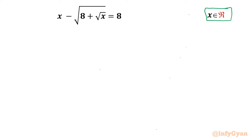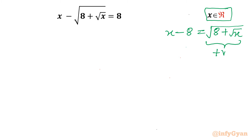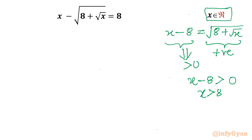Let's get started by writing the domain of the equation. I will write our equation as x minus 8 equal to square root of 8 plus square root x. Now for a real solution, this right-hand side should always be positive, which means our LHS should also always be positive. So x minus 8 should be positive, meaning x should be greater than 8. We will accept only those values of x where x is greater than 8.